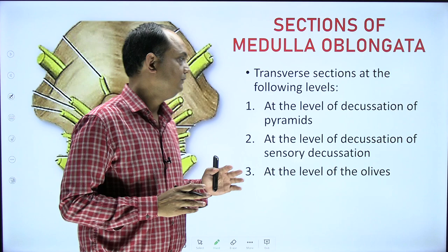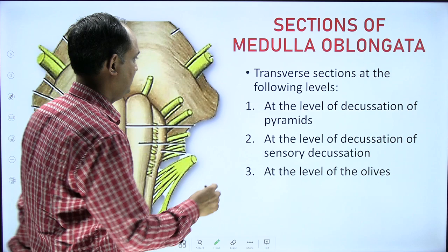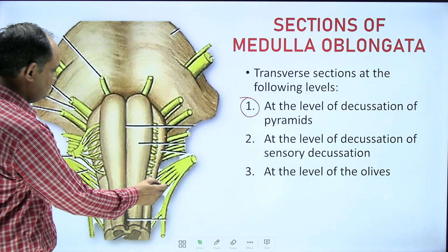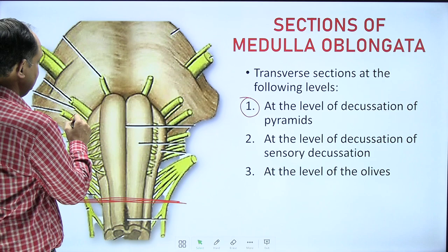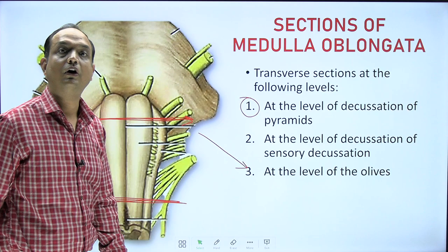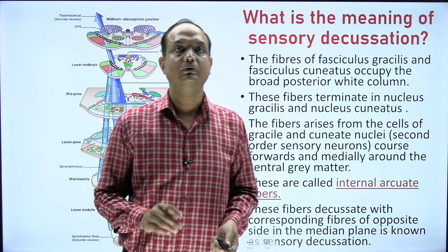There are three most important levels on which you will have exam questions. One is at the level of the decussation of pyramids, second is the sensory decussation, and third is the olive. When you look at the three levels, keep in mind that the pyramidal decussation is the lowermost level. At the upper part, we are talking about the level of olive, and in the middle you have the sensory decussation.